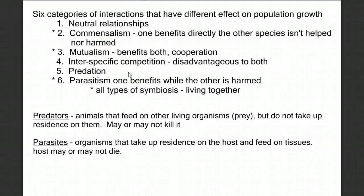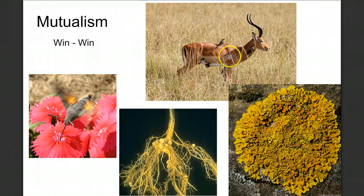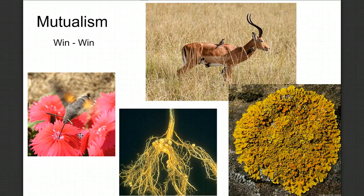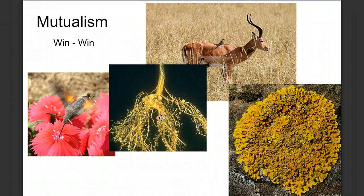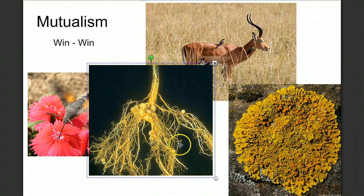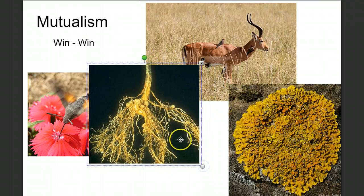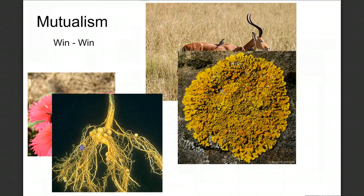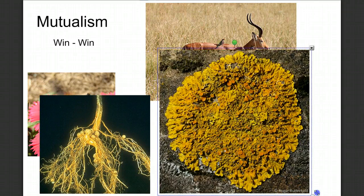The next one is mutualism — a win-win or cooperative relationship. For example, birds eating ticks and fleas off a gazelle both benefit: the gazelle gets rid of parasites and the birds get food. We also see mutualism between plants and their pollinators. Root nodules contain nitrogen-fixing bacteria that get a place to live while the plant gets nitrogen it can use. And lichens are a classic example of mutualism — a relationship between green algae and fungus, both providing something valuable to the other.